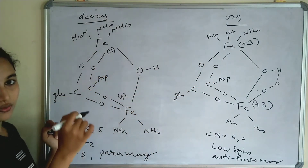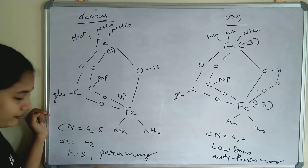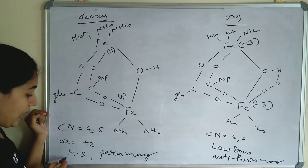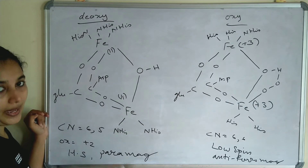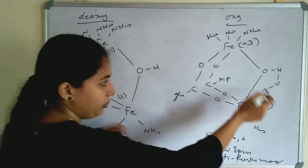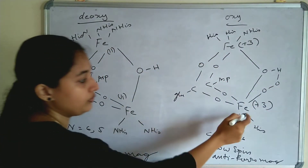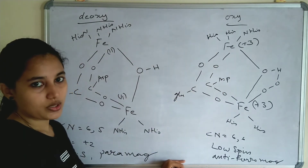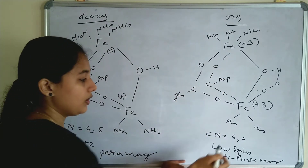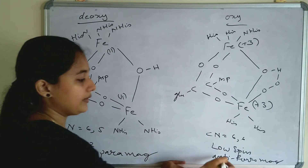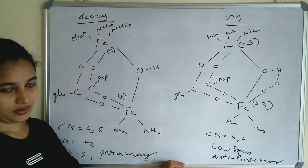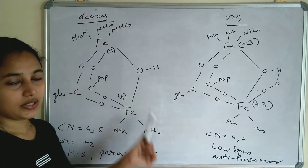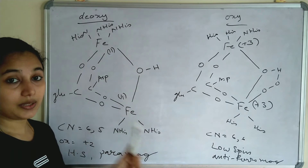To summarize: in the deoxy form of hemerythrin, the coordination numbers are 6 and 5, the oxidation state is +2, and it is high spin and paramagnetic. In the oxy form, O2 binds to one iron atom, both irons are in the +3 oxidation state, the complex is low spin, and the character is antiferromagnetic. These are the key differences between deoxy and oxy hemerythrin.